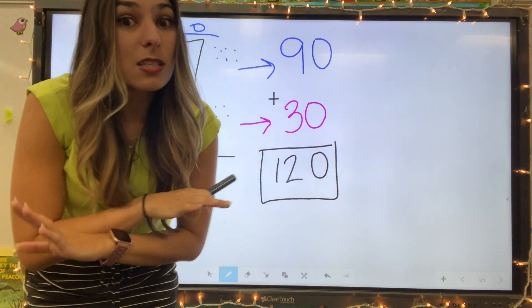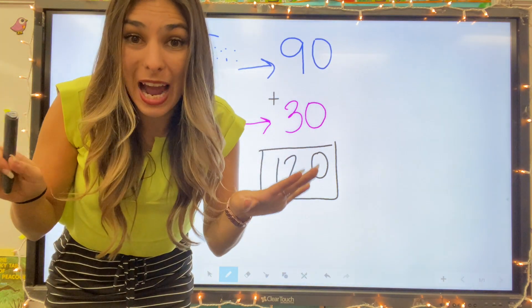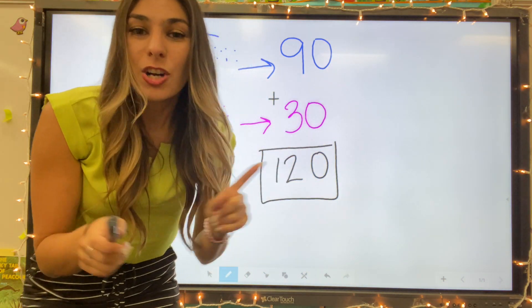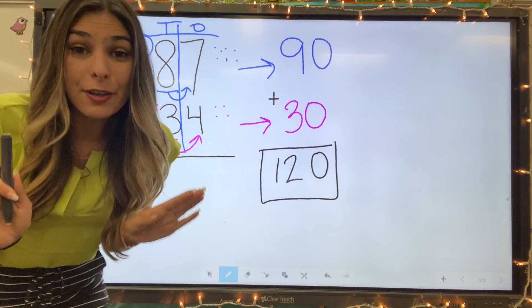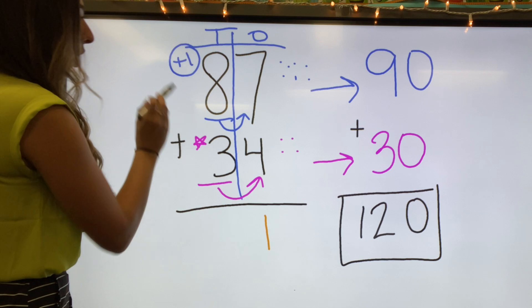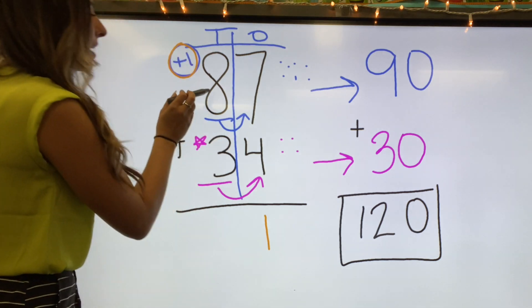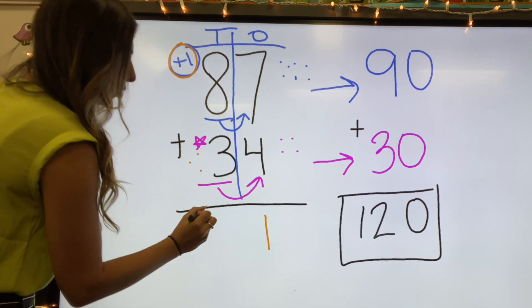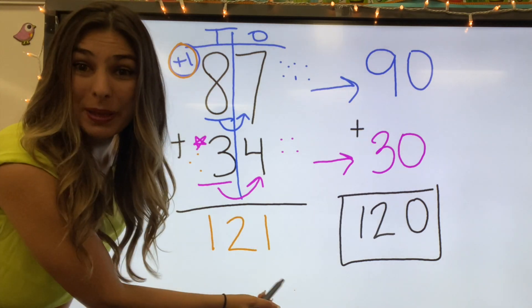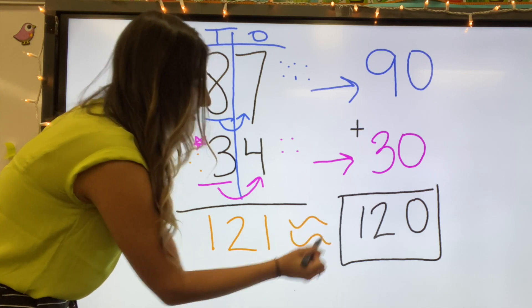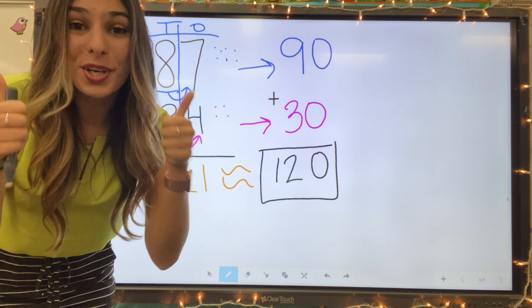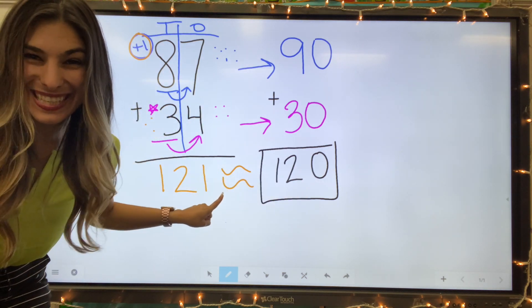Now when we estimate, it is not the exact number that this would add up to, but it's okay because we're looking for the estimate. We're looking for about how many. So let's actually add this up and see if we were close. We would add ones first. So seven, eight, nine, ten, eleven. Carry that one. We have eight, nine, ten, eleven, twelve. Oh, so our real answer would be 121, which is about 120. So our rounding and adding was correct because this number is pretty close to this one.